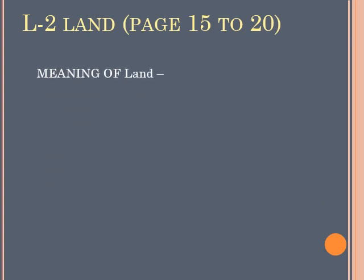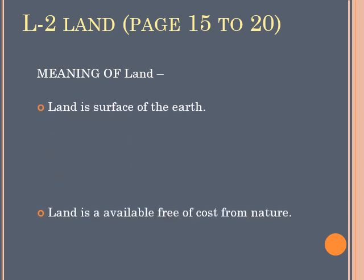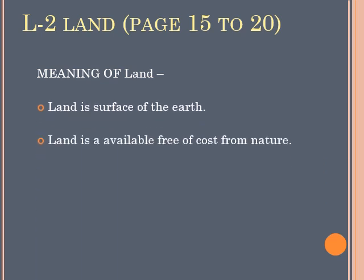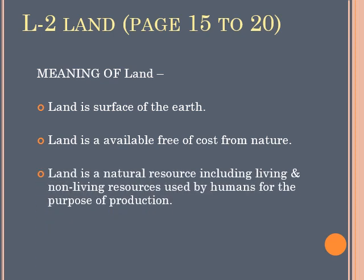First we are going to see the meaning of land. Number 1, land is the surface of the earth. Number 2, land is available free of cost from nature. And number 3, land is a natural resource including both living as well as non-living resources, which are used by human beings for the purpose of production.